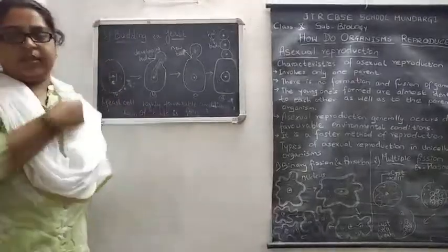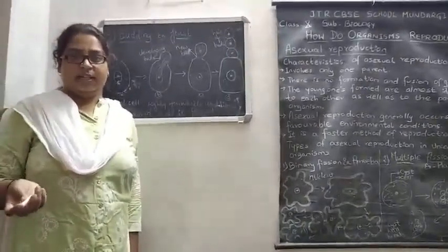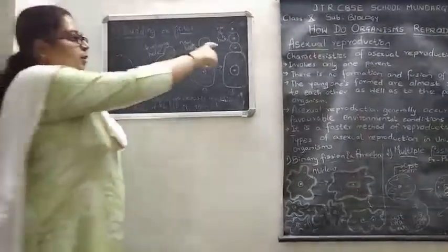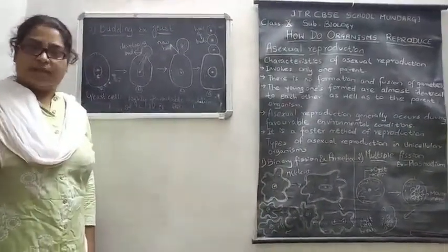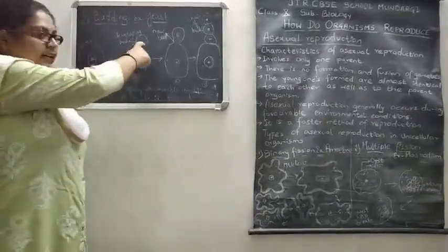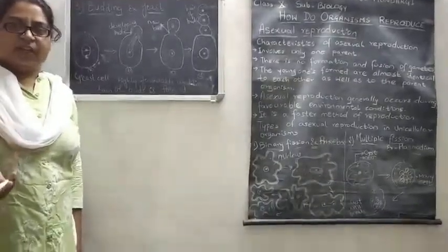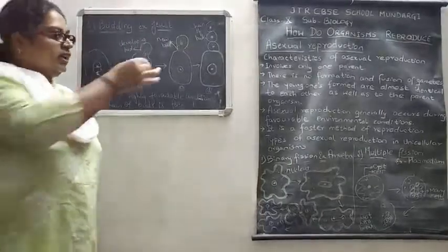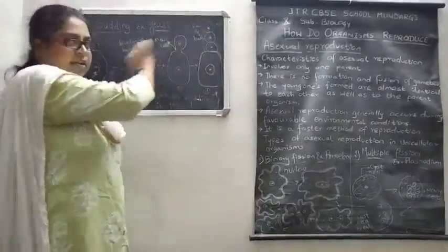If conditions are favorable, the newly formed bud gets released into the environment and grows as a new identical organism. If conditions are not proper, the yeast cell forms a chain of buds. Budding means a small outgrowth forms over the parent organism; that outgrowth is called a bud and gets all essential nutrients from the parent yeast cell along with nucleus and cytoplasm contents.